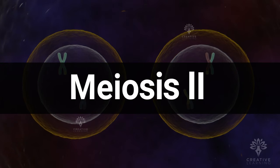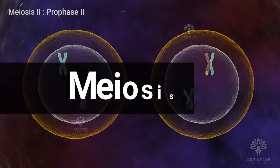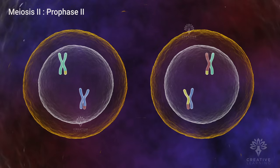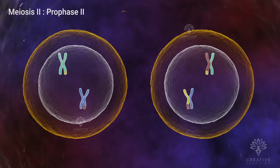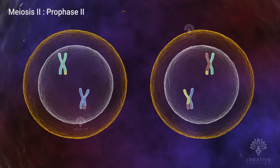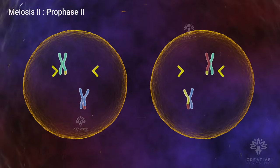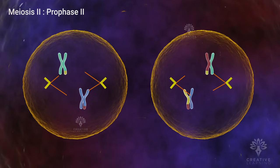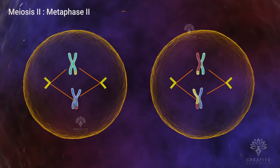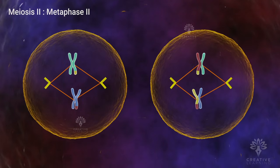Both cells now enter the next stage, meiosis II. However, unlike meiosis I, DNA is not replicated until meiosis II begins. Also in prophase II, the nuclear envelope disappears and spindle fibers fan out from the two sets of paired centrioles. During metaphase II, the chromosomes in each cell align at the equator and attach to spindle fibers at either pole.